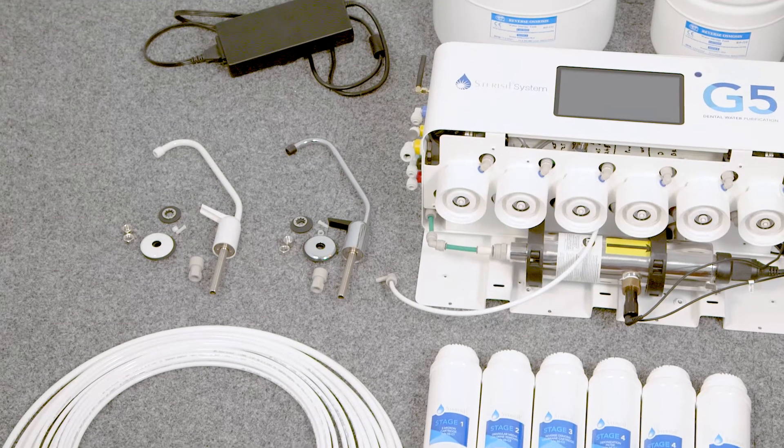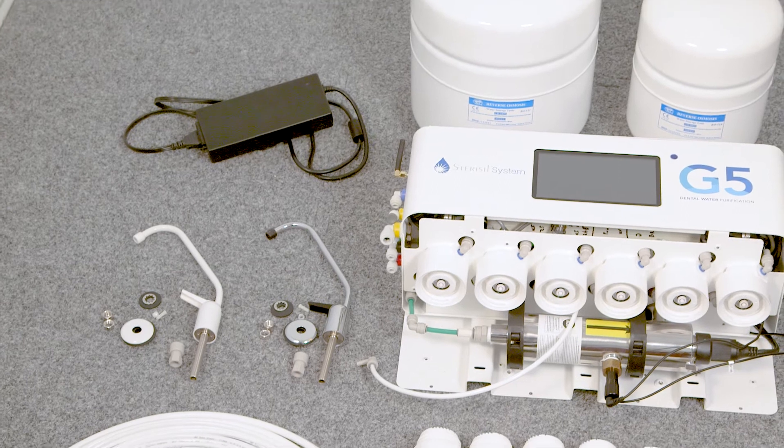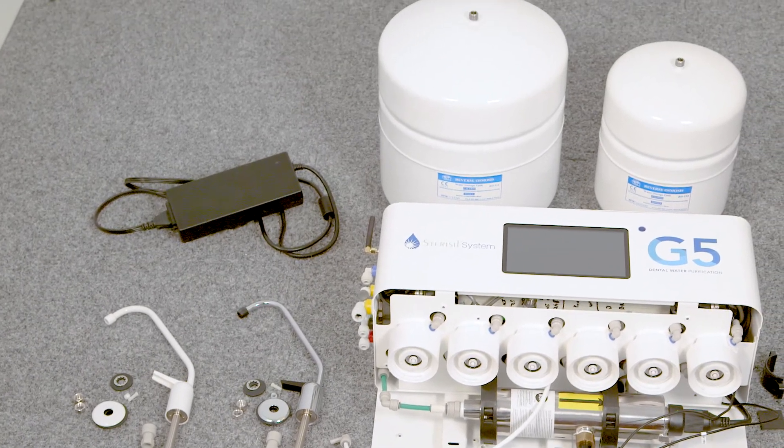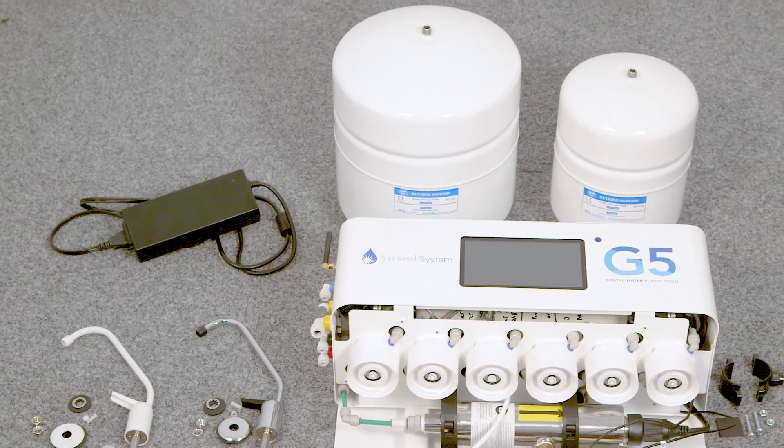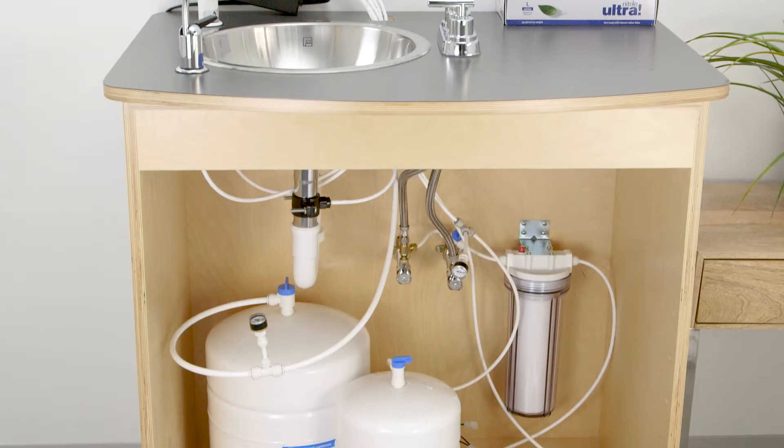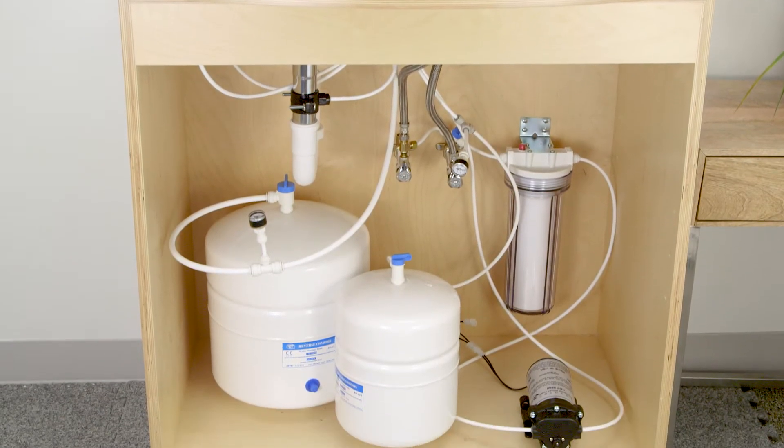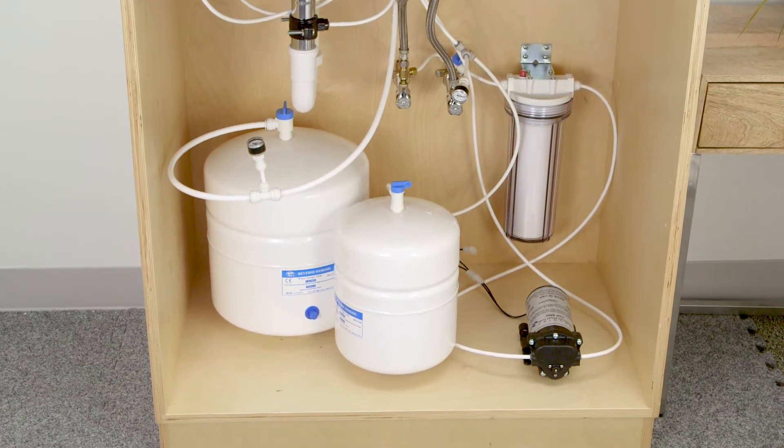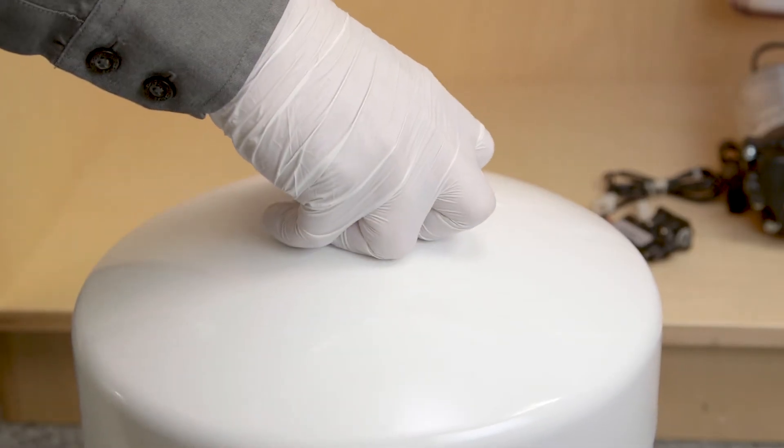Water storage tanks. The standard G5 configuration includes a four gallon reverse osmosis tank and a two gallon dental tank. These sizes may differ with customer specifications and needs. As a default, the RO storage tank will be the larger of the two. Let's start by removing the white cap from the RO tank.